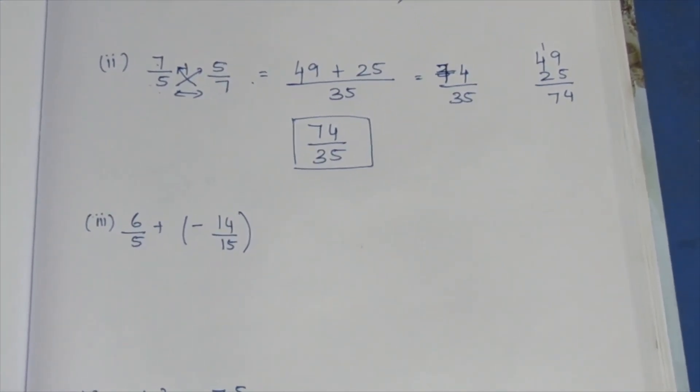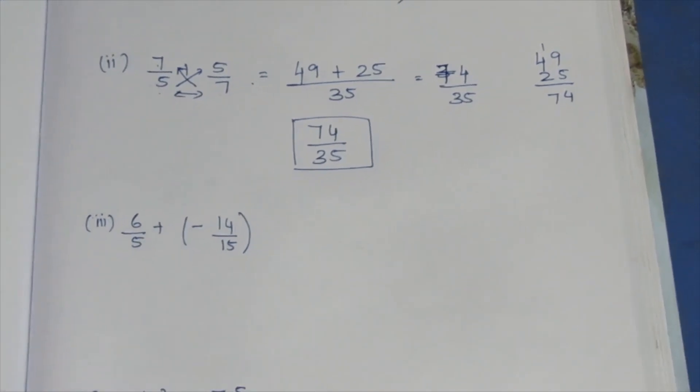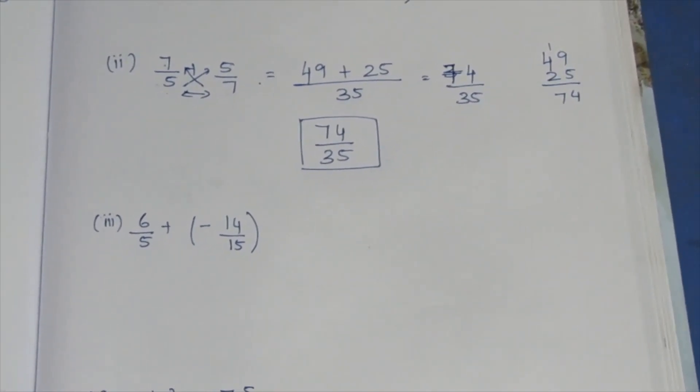Now third sum is 6 by 5 plus minus 14 by 15.